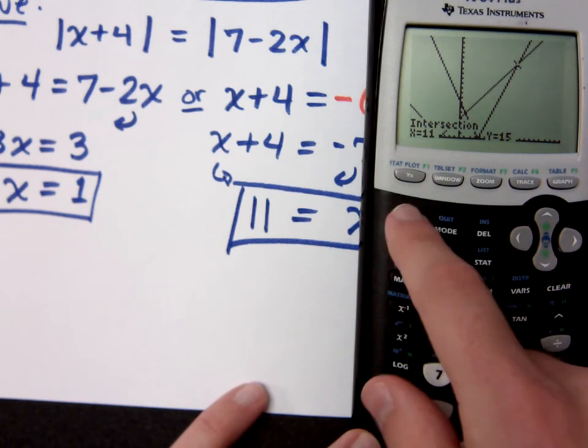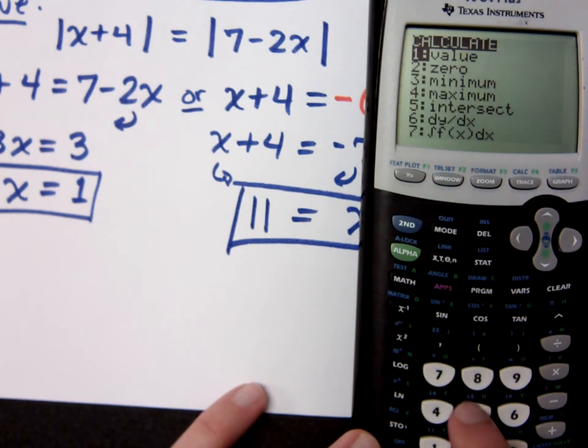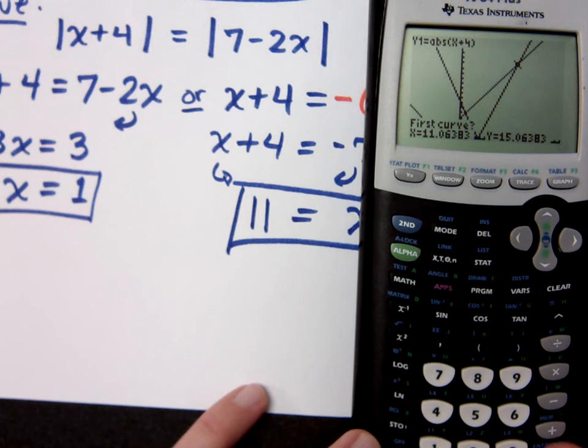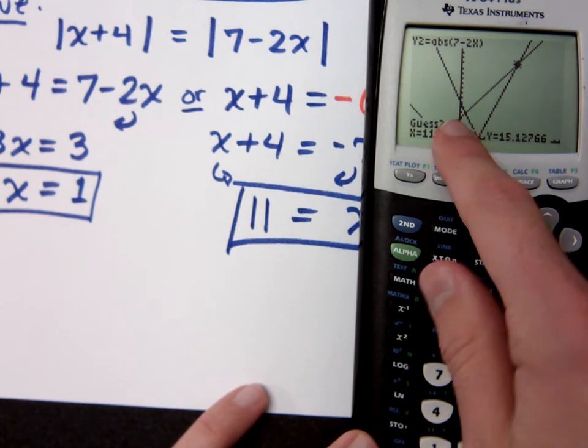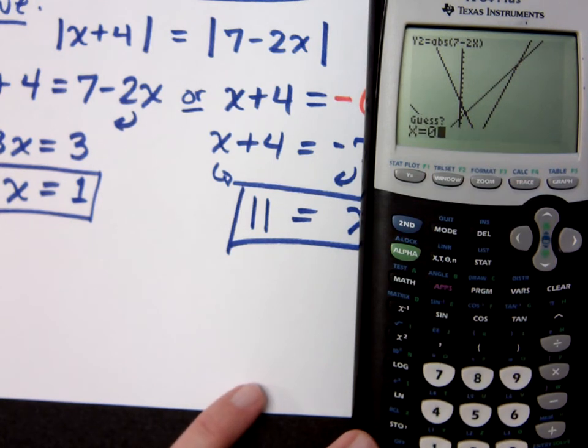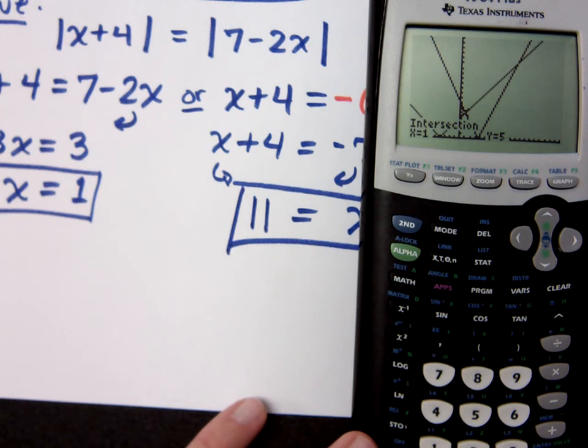You can check it that way. But I'm saying, if you do your second trace and intersect, first curve, second curve, your guess, well, I think it's close to 0. So, find the one that's closest to 0. And it tells me x equals 1. So, it gave me both of my solutions.